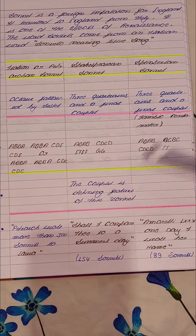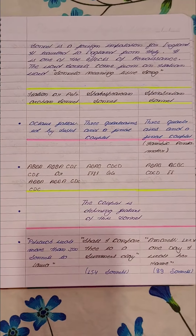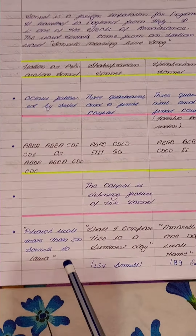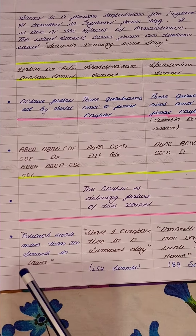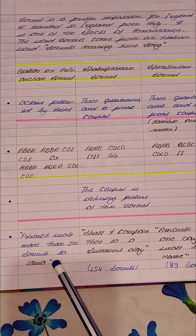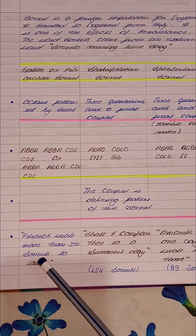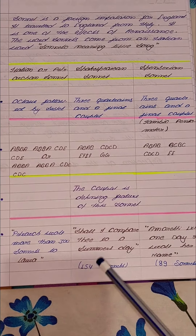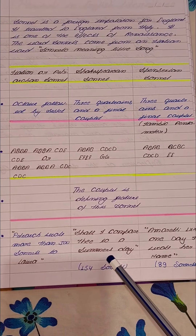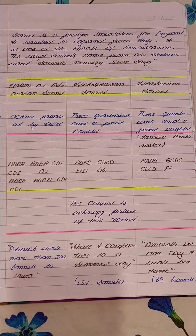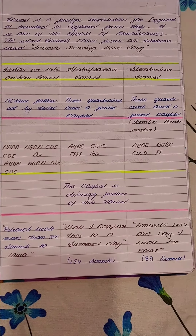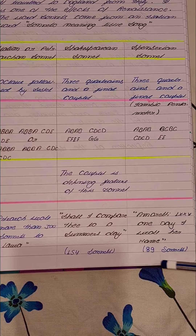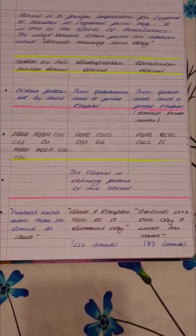That was the style and pattern of the Shakespearean sonnet. Now let's see how many sonnets each poet wrote. Petrarch wrote over 300 sonnets, all addressed to Laura, who was his love interest. Shakespeare wrote 154 sonnets, addressed to a dark lady and a handsome young man. Spenser dedicated his sonnets, called the Amoretti, to Elizabeth Boyle, his wife, and wrote 89 sonnets.